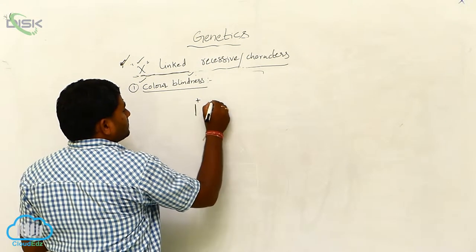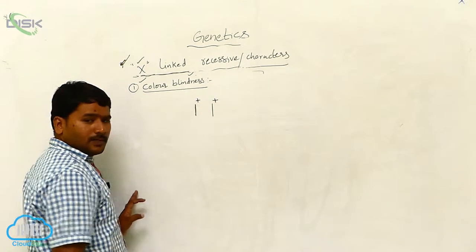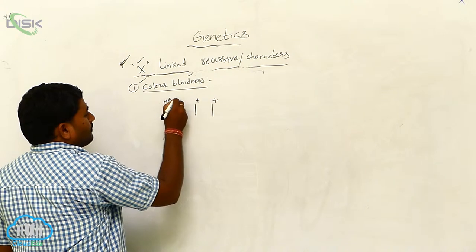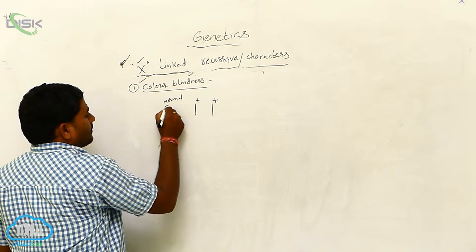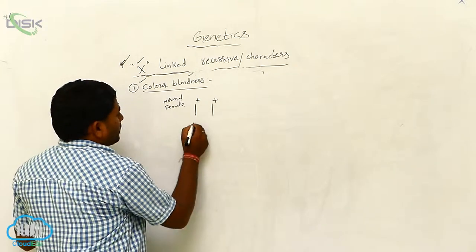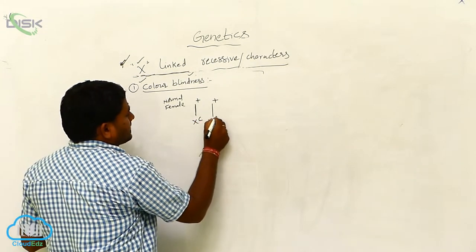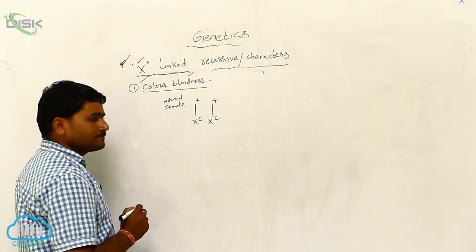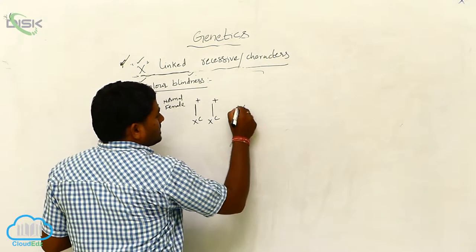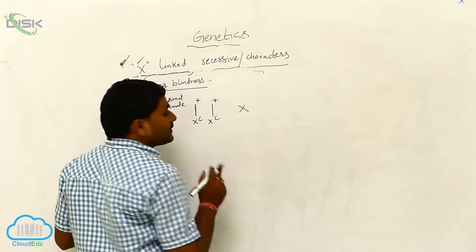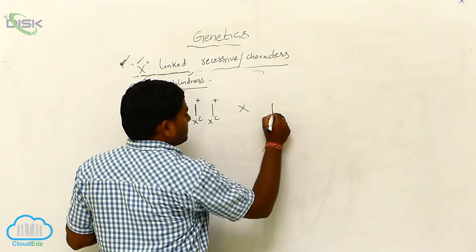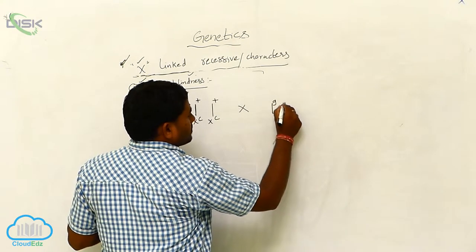These are normal — normal female. If you want to understand well, you can call it as X capital C, X capital C. So, normal female. And if you cross with the affected male — affected male means diseased male — this is Y chromosome.